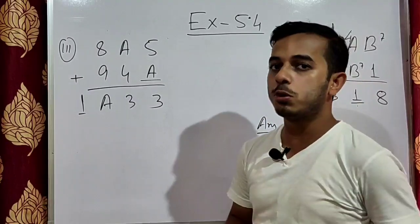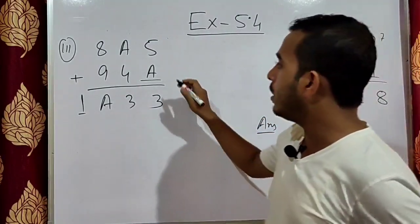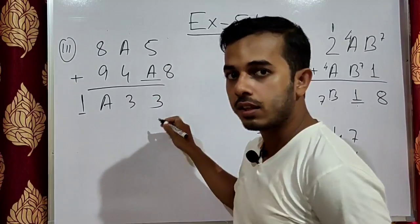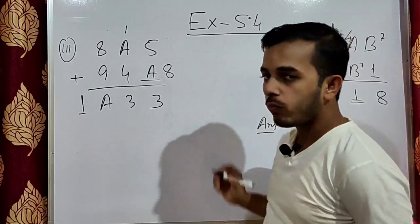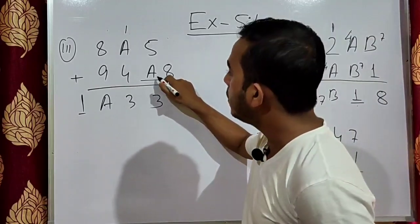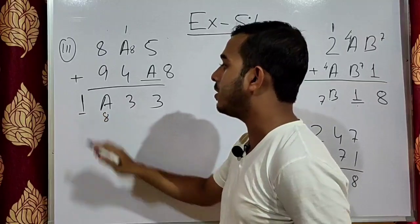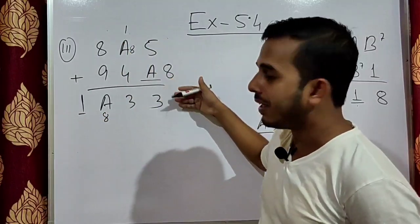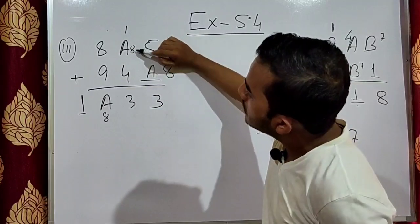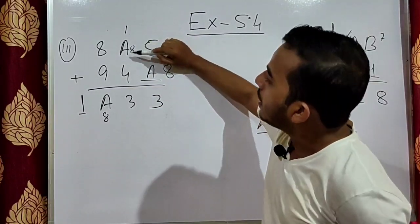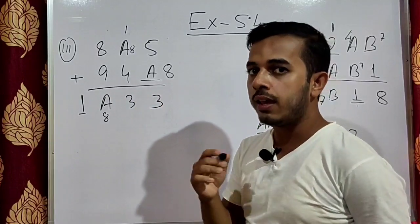If A is 8, we replace all occurrences of A with 8. In the tens column: 8 plus 4 is 12, carry 1, write 2 — but we need 3. Wait, let us check: 1 plus 8 is 9, and 9 plus 4 is 13, write 3 carry 1. In the hundreds column: 8 plus 1 is 9, and 9 plus 9 is 18, write 8 carry 1. This confirms value of A is 8.